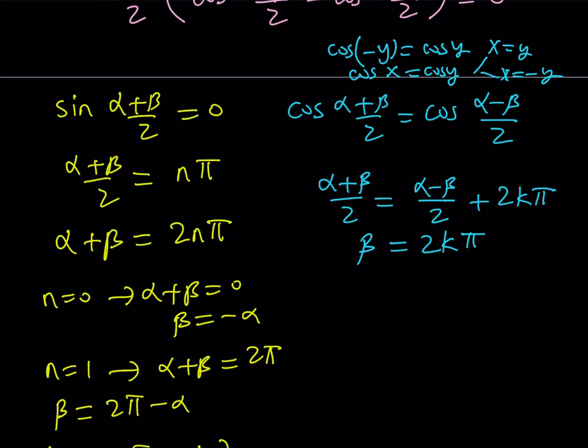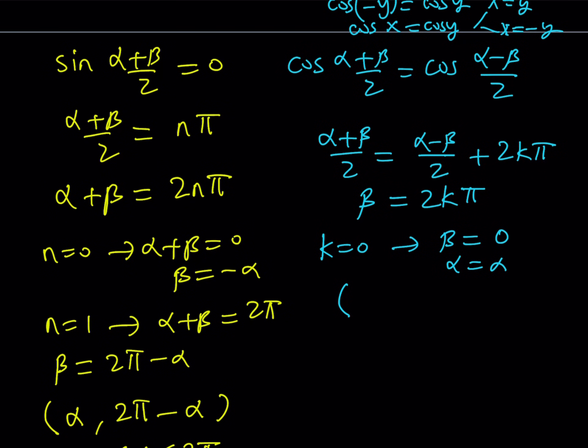Notice that my solutions have to be less than 2 pi, so I can't use k equals 1. The largest k value I can use is 0. So, if k is equal to 0 from here, beta becomes 0. So, beta is 0, but alpha is what? Alpha is alpha, so we can write our solutions as an ordered pair as alpha comma 0.